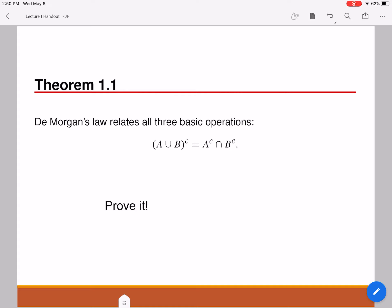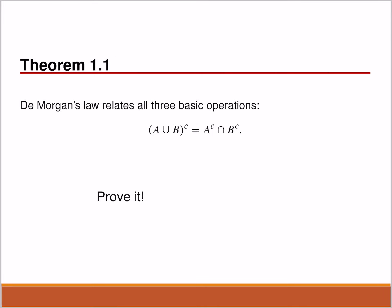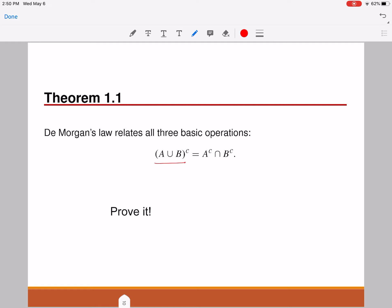Now, here's what I would like for you guys to do. Pause this video and try to prove De Morgan's law. De Morgan's law states that A union B complement is equal to A complement intersection B complement. Remember, A union B complement is essentially a set, and A complement intersection B complement is another set. To prove their equality, you need to show that A union B complement is entirely contained in A complement intersection B complement, and similarly that A complement intersection B complement is entirely contained in A union B complement. You can pause here, try to work on this problem, and when you're ready, unpause the video.